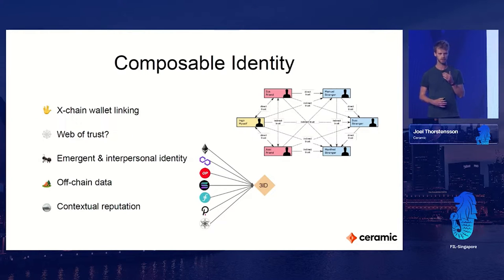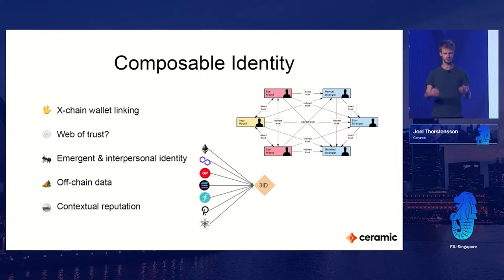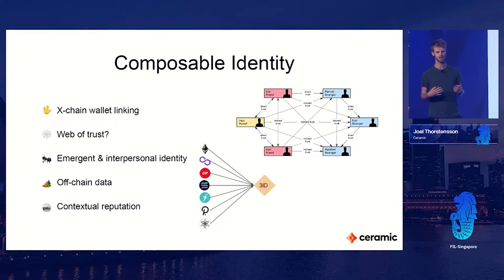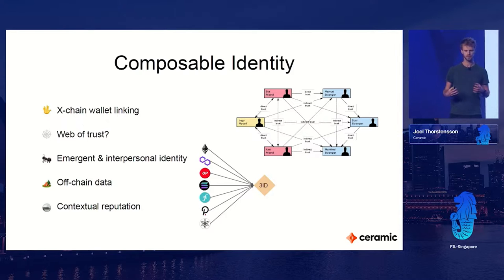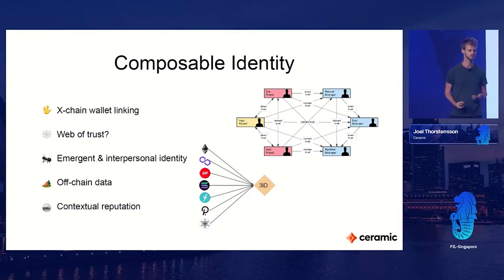The way I think about what we can achieve is something I call composable identity. What if I could take all my different wallets, link them together privately, and have the ability to selectively disclose that these accounts are associated to my pseudonymous identity? And bring all the data associated with that identity across applications that are in different blockchain ecosystems.